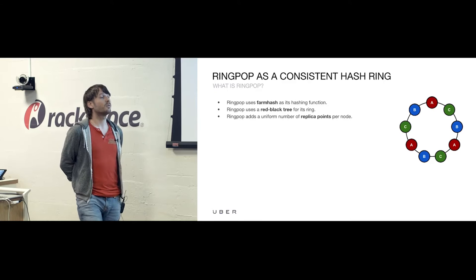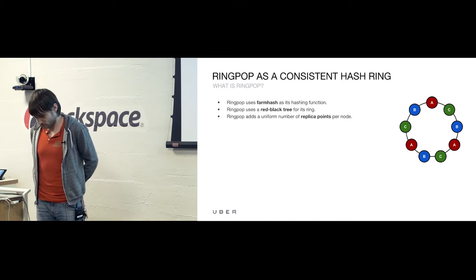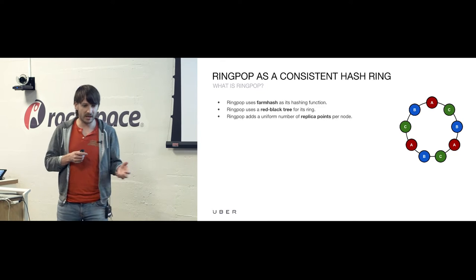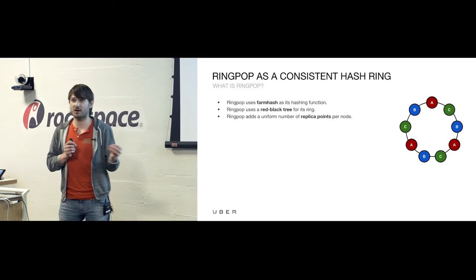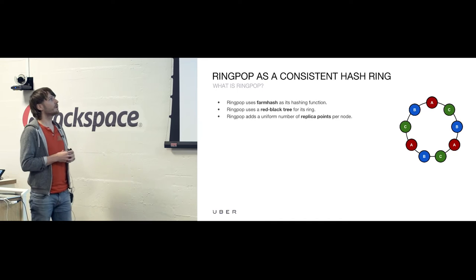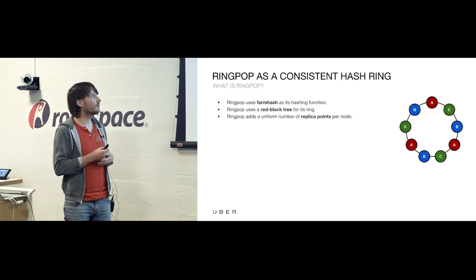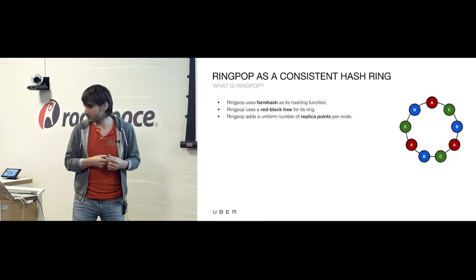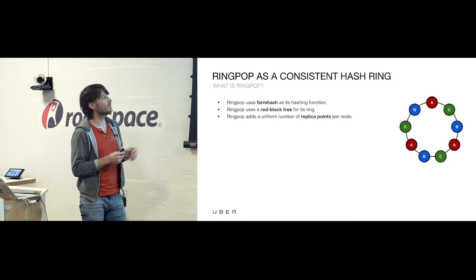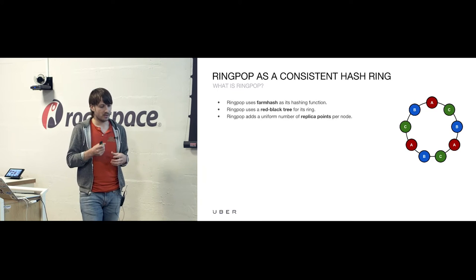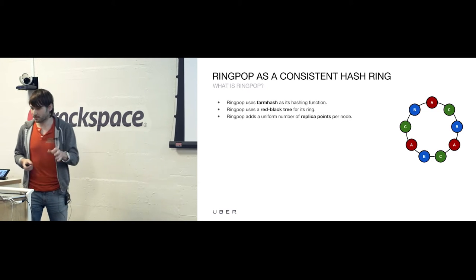FarmHash is derived from CityHash, a library developed by Google. Originally we were using a library by Voxer which uses hardware-accelerated CRC32 instructions, but FarmHash actually wound up being faster. RingPop's underlying data structure for its ring is a red-black tree, providing O(log n) lookups, inserts, and removals. To spread nodes around the ring for more even distribution, it adds replica points for every node — a uniform number — so nodes and hosts are treated as homogeneous.